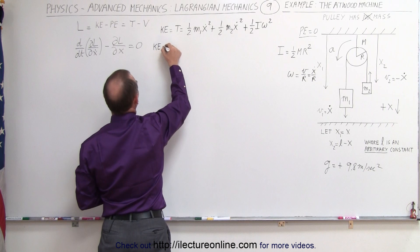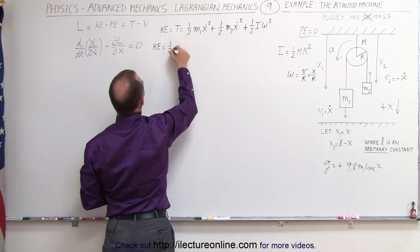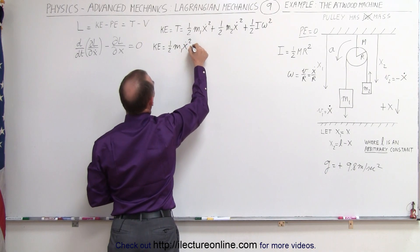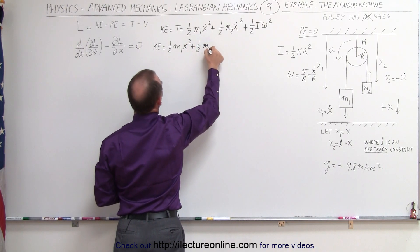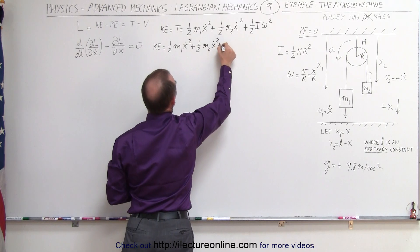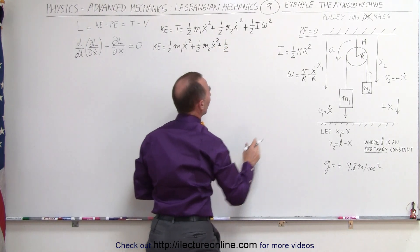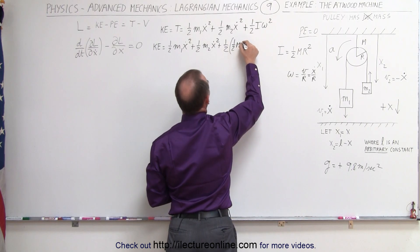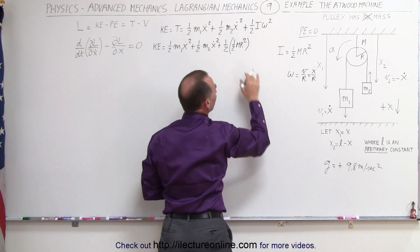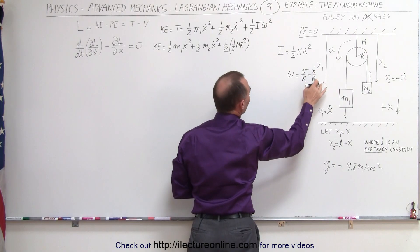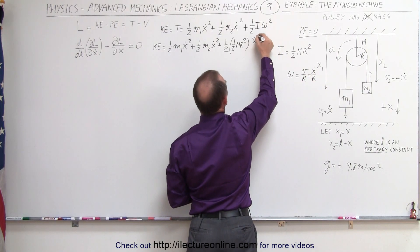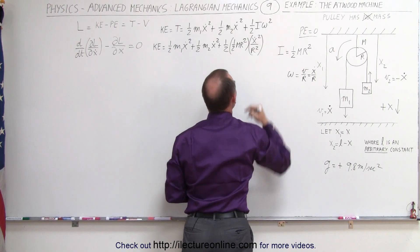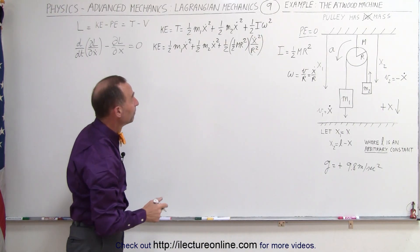In this case the velocity would be equal to x-dot over r. We can plug that in here. We end up with the kinetic energy equal to one-half m1 x-dot squared, plus one-half m2 x-dot squared, plus one-half times the moment of inertia — which is one-half the mass times r squared — and omega can be written as x-dot over r, so it's x-dot squared divided by r squared instead of omega squared.